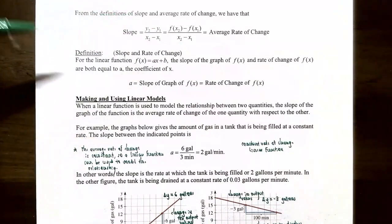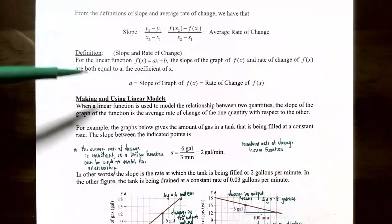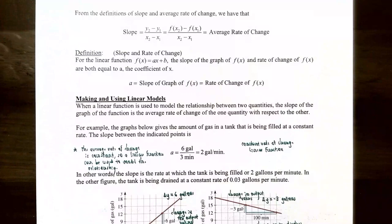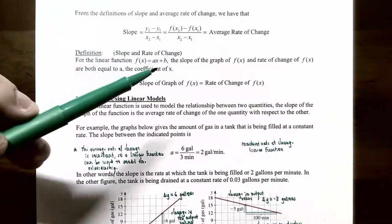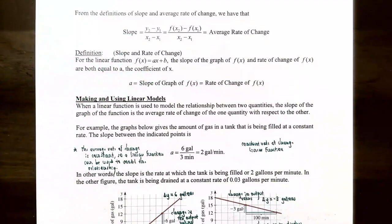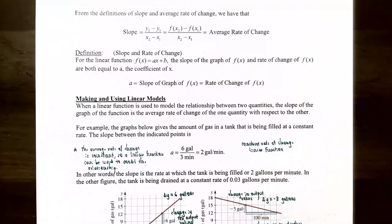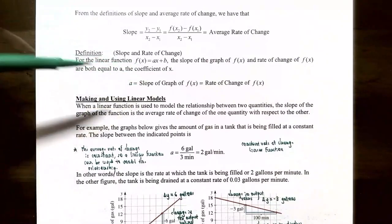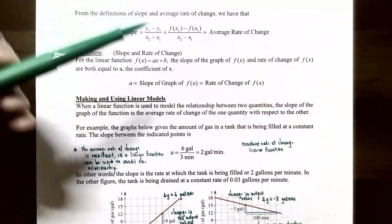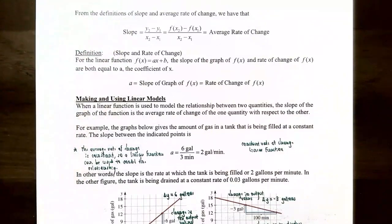For a linear function f(x) = ax + b, the slope of the graph and the rate of change of the function are both equal to the number a — the coefficient in front of the x term. If you're talking about a linear function's graph, the slope of that line will be a, and the rate of change of the function is also a.